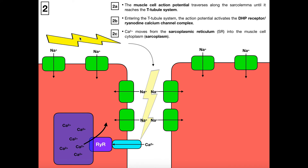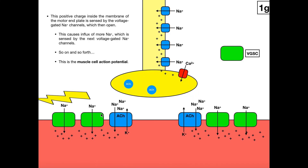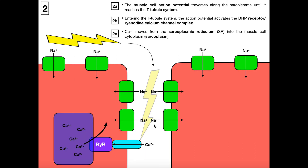At some point, this action potential is going to encounter something called the T-tubule system, or the transverse tubule system. The transverse tubule system are basically canal-like structures that allow the action potential to move deeper into the muscle tissue. If action potentials only moved as typically drawn, they would only activate superficial muscle fibers. But if you're going to have a strong contraction, you need to also activate deeper muscle fibers. So this action potential moving into the transverse tubule system allows deeper muscle fibers to also be activated — but it's also necessary even for superficial muscle fibers. The action potential moves along with voltage-gated sodium channels opening sequentially in the T-tubule system.